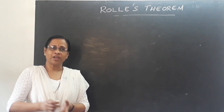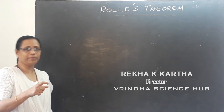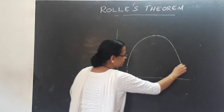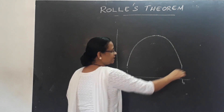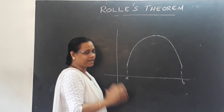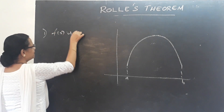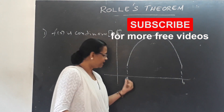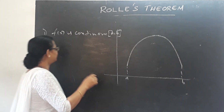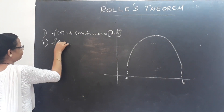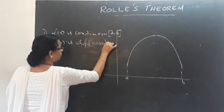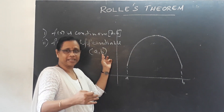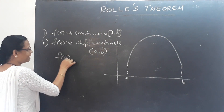In this chapter, the first topic is Rolle's Theorem. Rolle's Theorem applies on a closed interval [A, B]. The first condition is that f(x) is continuous on the closed interval [A, B]. The second condition is that f(x) is differentiable on the open interval (A, B).